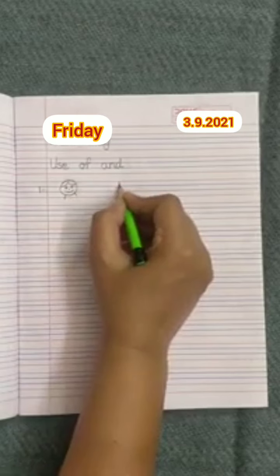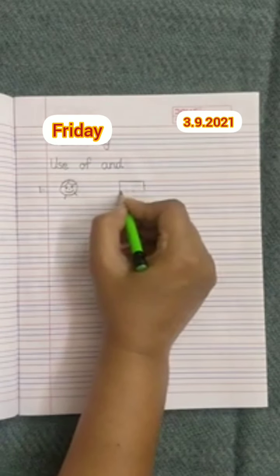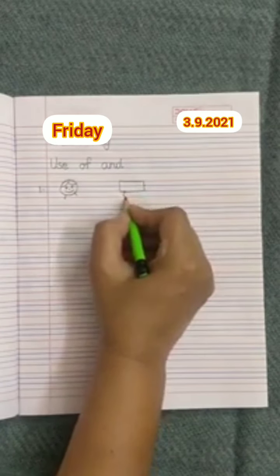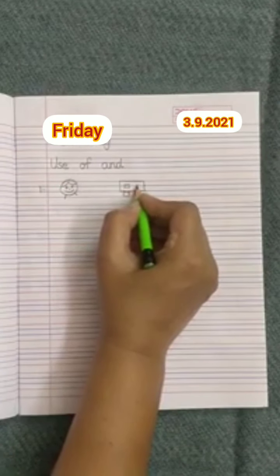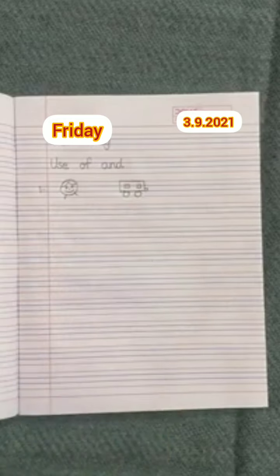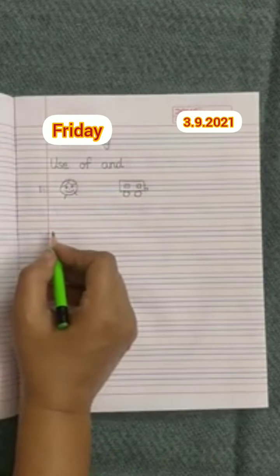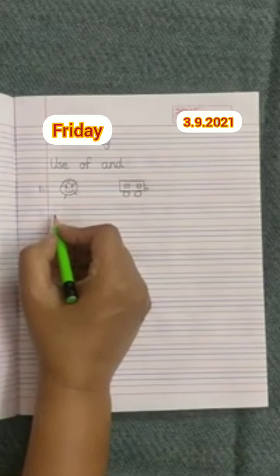Now, leave some space and draw a rectangle here. Draw two circles, two squares. And this is a picture of a van. Now, we will write a sentence here.